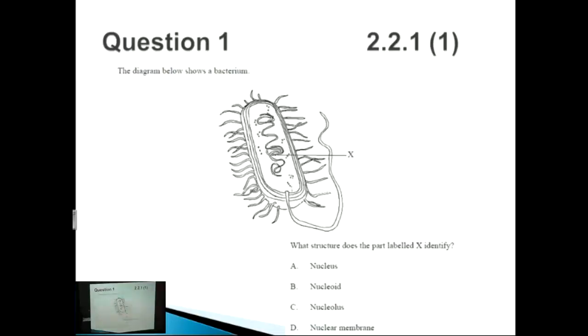Let's look at question one for this particular set. The diagram below shows a bacterium that we have here. What structure does the part labeled X identify? We've got a central structure within this bacterium and you can notice a lot of the peripheral structures. Peripheral just means on the side of the bacteria.